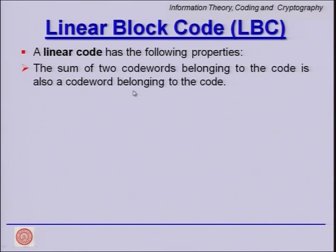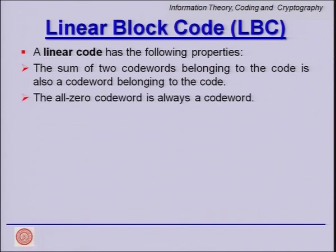We also briefly looked at what a linear block code (LBC) is. A linear code has the following properties: the sum of two codewords belonging to the code is also a codeword belonging to the code. This means take any two codewords, add them up, and you get another valid codeword. This is a constraint that adds an algebraic structure.